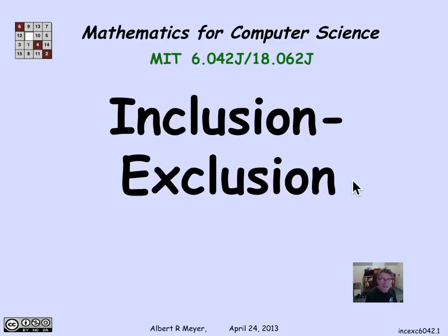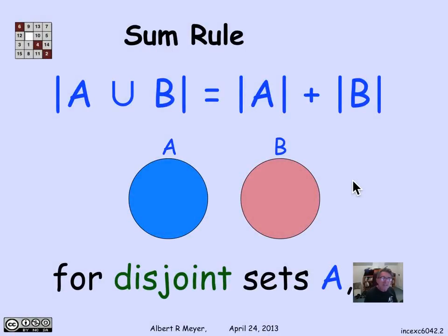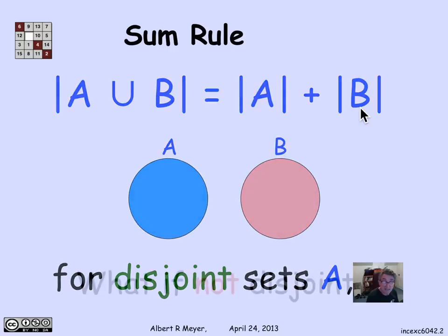The final general counting rule we'll examine is called inclusion-exclusion. It is a straightforward generalization of the sum rule, at least in the simple case of two sets. The sum rule says that if you have two sets A and B that are disjoint — no overlap — then the size of A union B equals the size of A plus the size of B. That's obvious; we took that as a basic axiom.